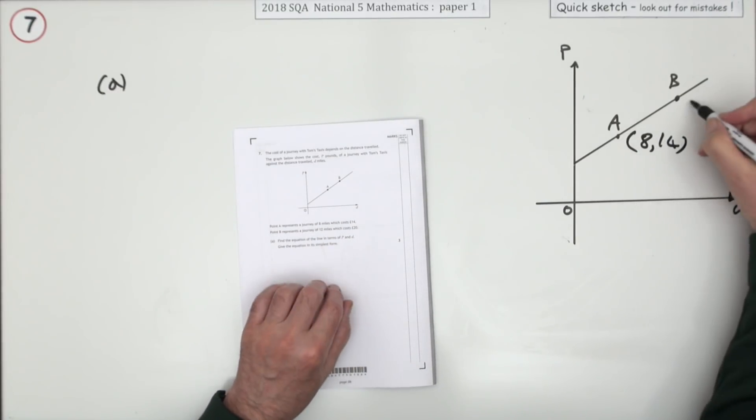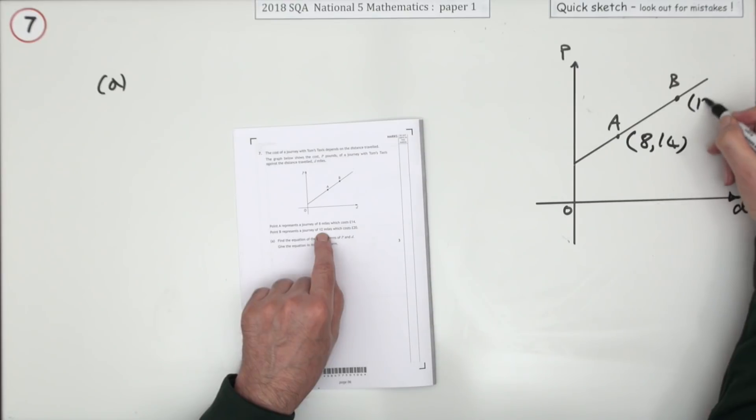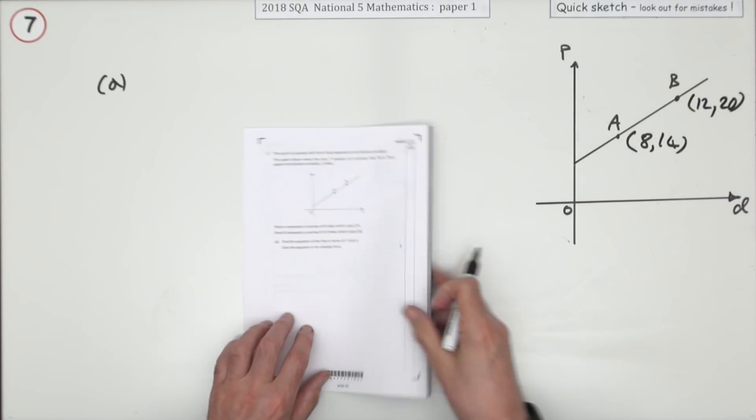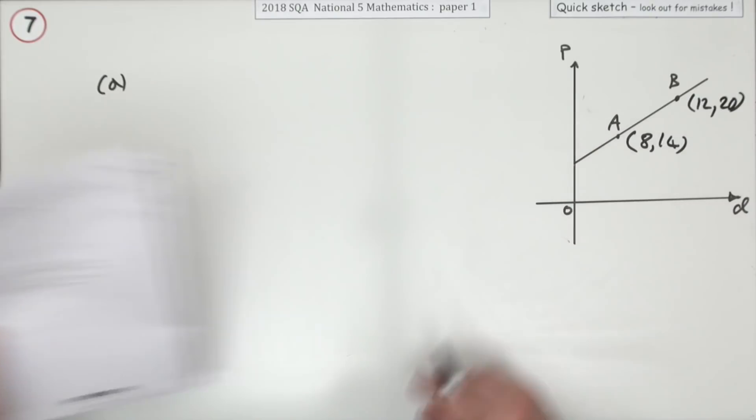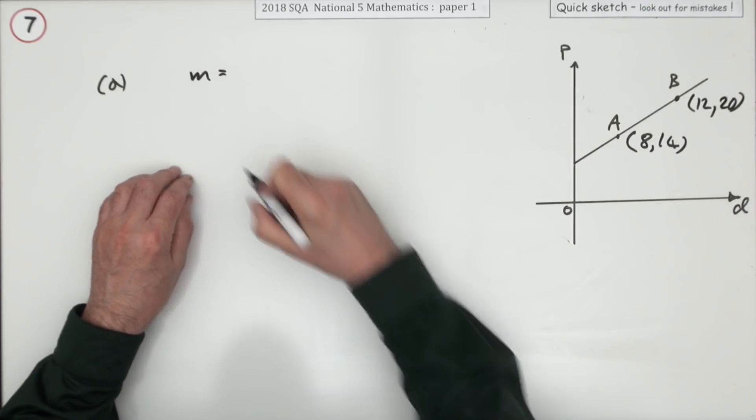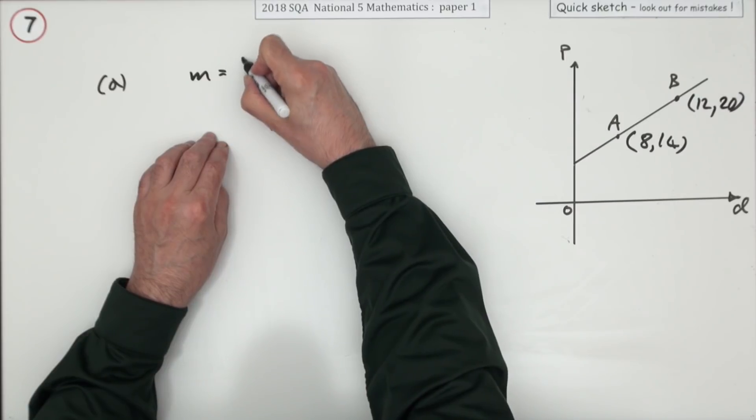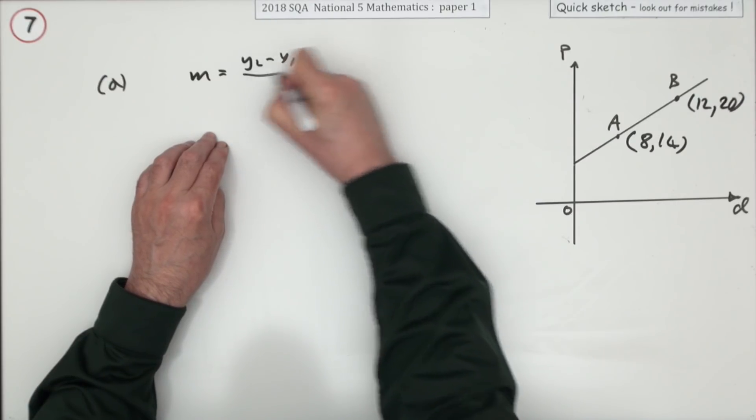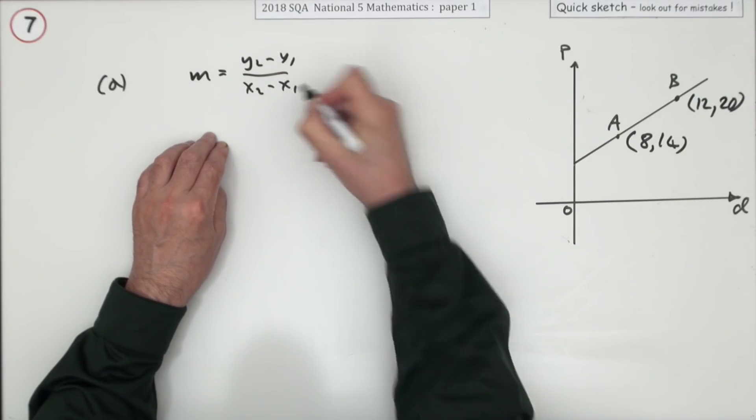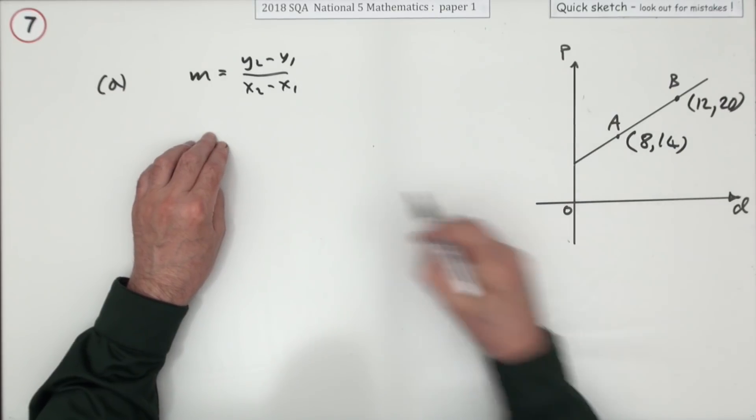b was 12 miles, so that's 12 along and 20 up. And for three marks it says what's the equation of that line? Well, the first thing would be get its gradient.